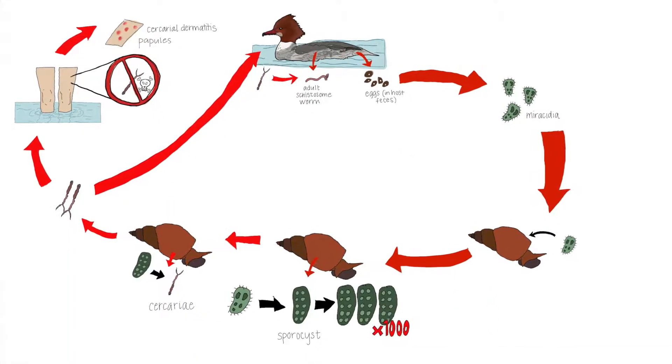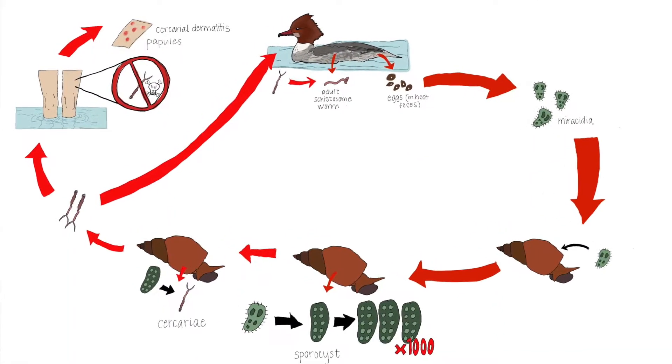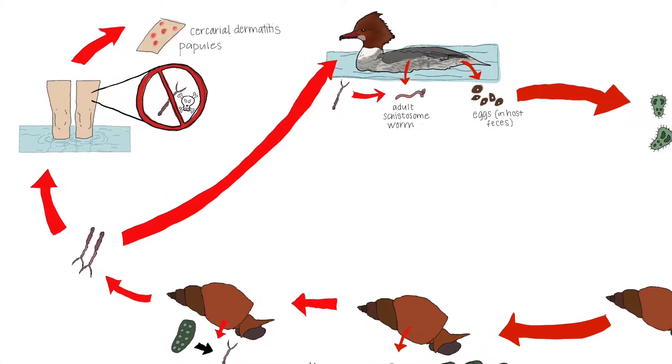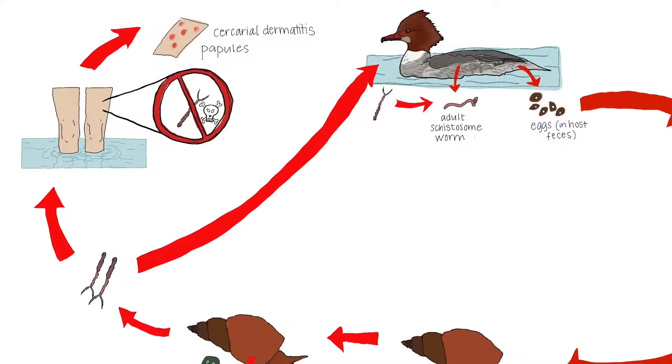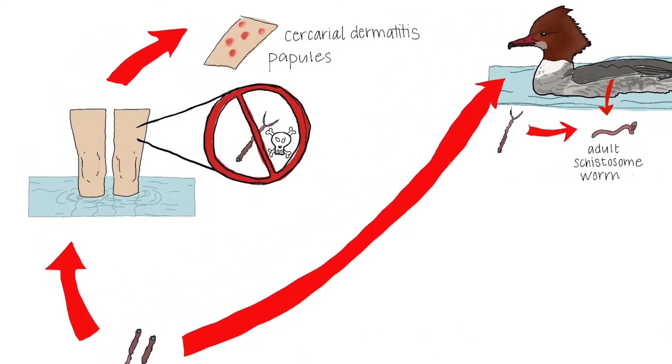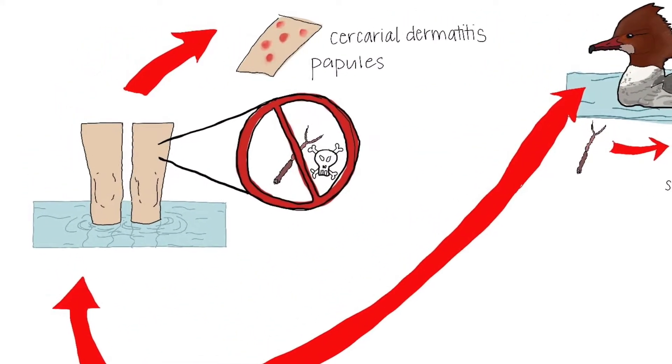Those red itchy bumps you get, called papules, are your immune system's response to those dead parasites in your skin. Each bump is where one of those less-than-one-millimeter-long parasites infected you — they're actually 1/80th of an inch long. Since it is an allergic reaction to the parasite, some people will be more sensitive than others, and continued exposure can actually make you have a stronger reaction to it in the future.